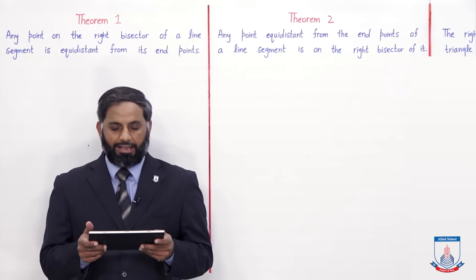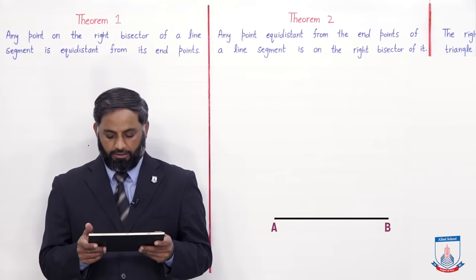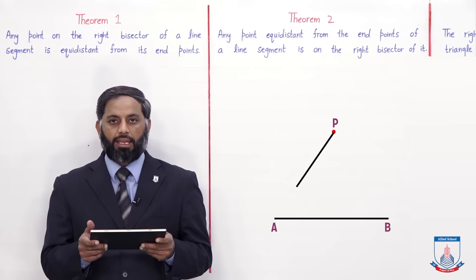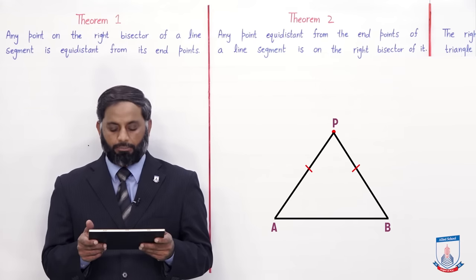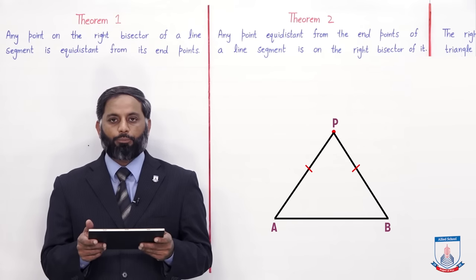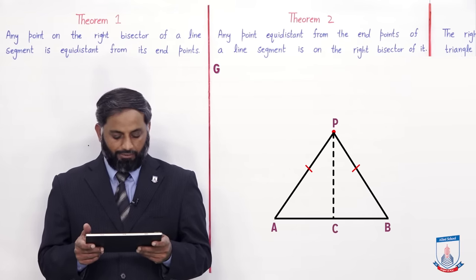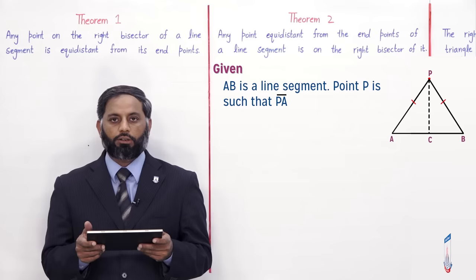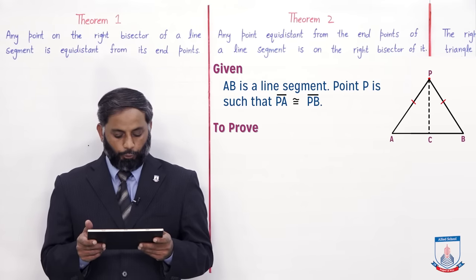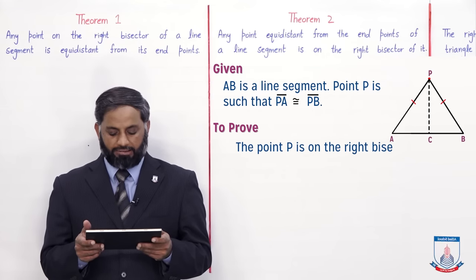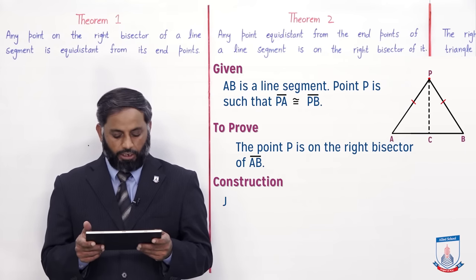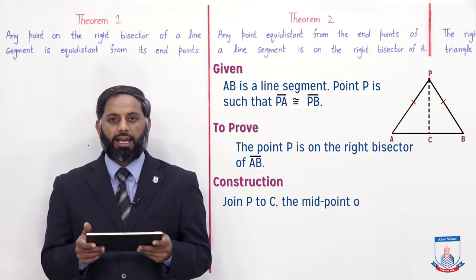Let's first understand the figure. We draw a line segment AB and take a point P which is at equal distance from both end points. We join P to A and P to B. In construction, we join P to C, the midpoint of AB. Given: AB is the line segment, point P is such that PA is congruent to PB. To prove: point P is on the right bisector of line segment AB. Construction: join P to C, the midpoint of line segment AB.